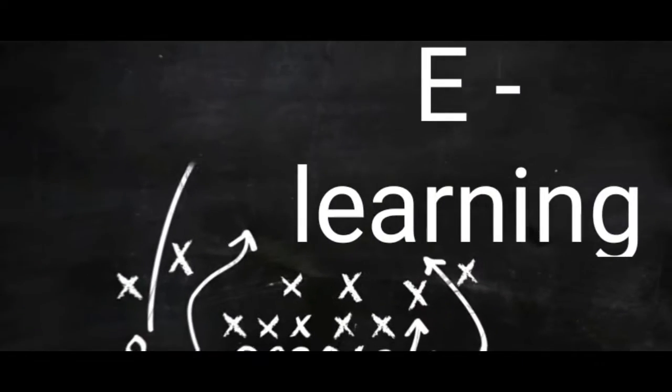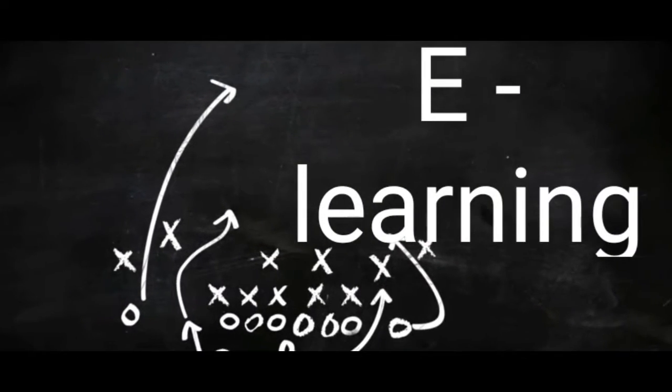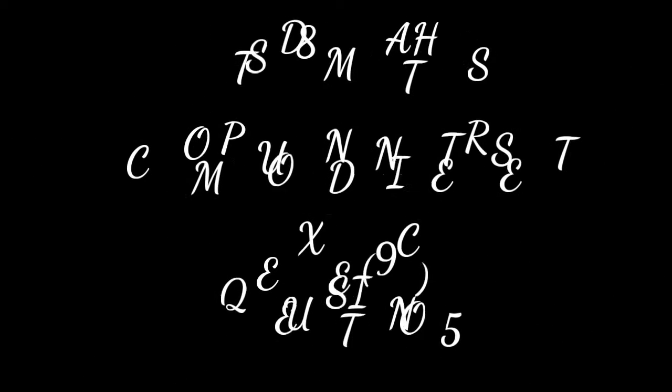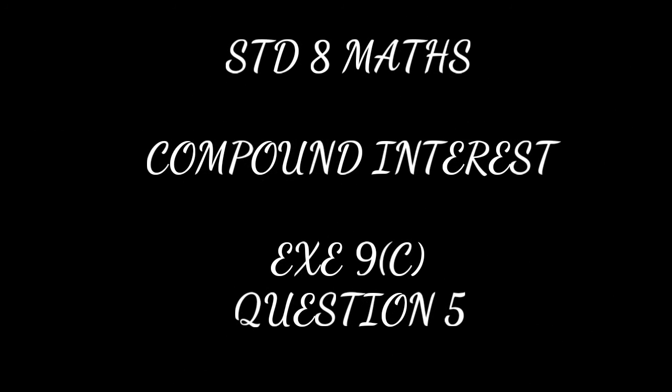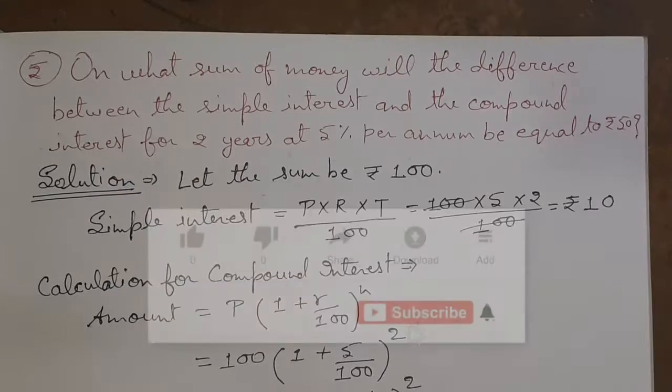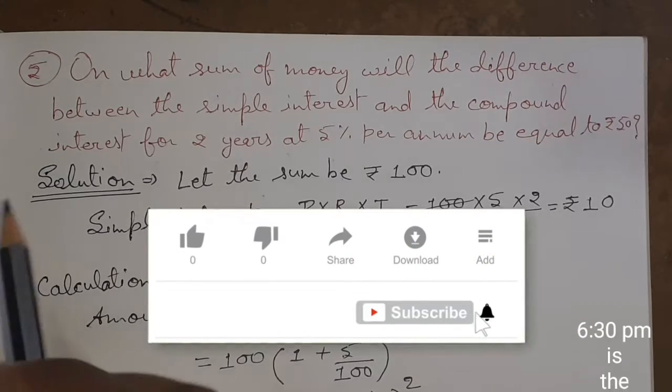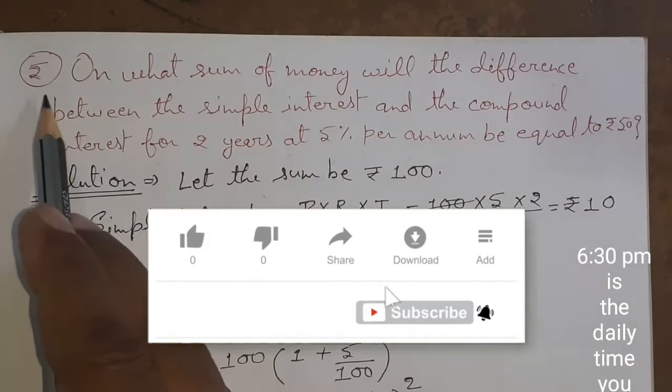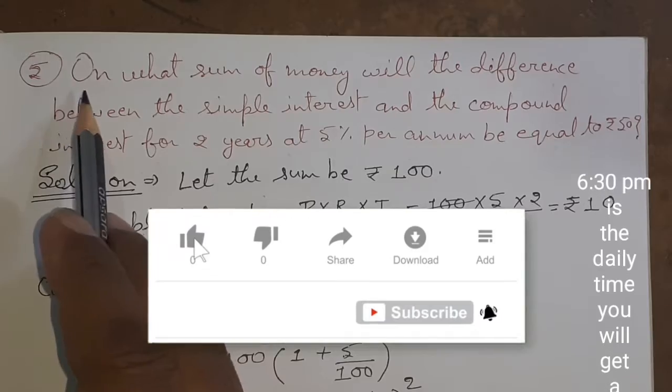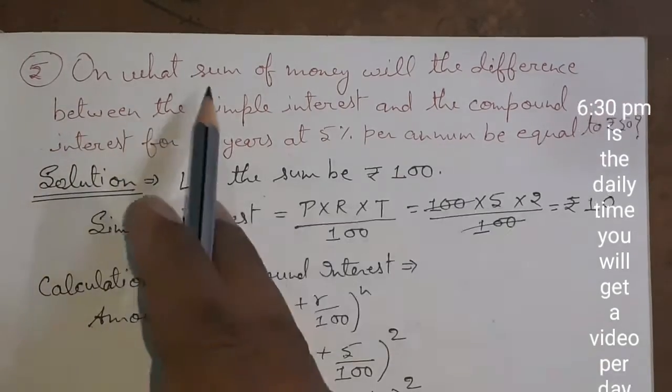Hi everyone, this is Asish and you are watching e-classes by Sit Chitlal Academy. Now we are going to do question number five of exercise 9C. It's a standard question on what sum of money will the difference between the simple interest and the compound interest for two years at five percent per annum be equal to rupees 50.